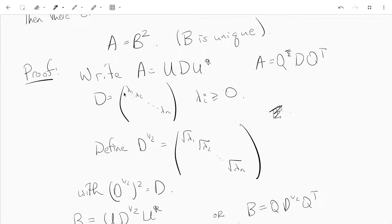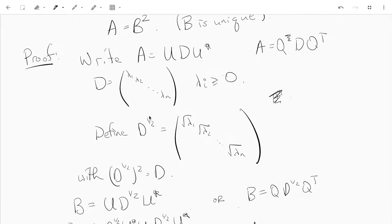Now we're just going to take B to be, in the Hermitian case, UD^(1/2)U*, or B is going to be QD^(1/2)Q^T in the symmetric case.